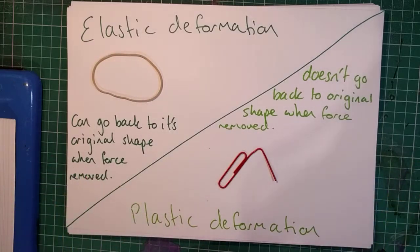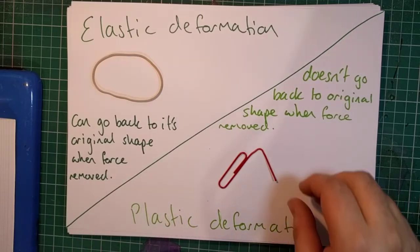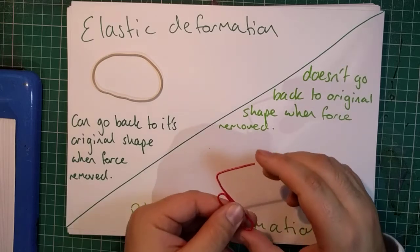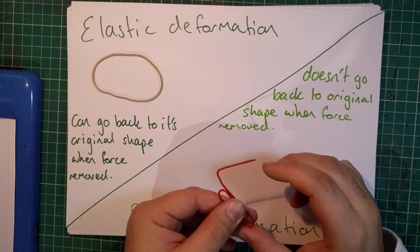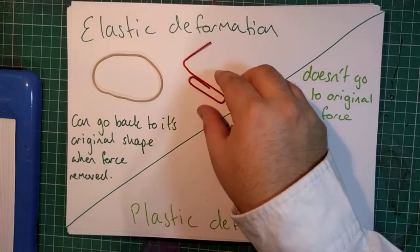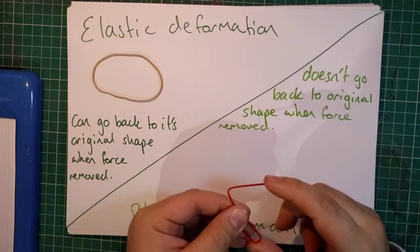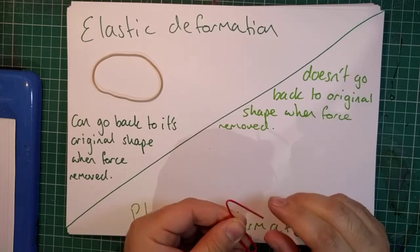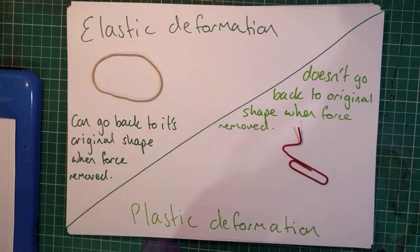Some materials much more easily undergo plastic deformation than elastic deformation and vice versa. So this steel paper clip, it is possible to bend it just a little bit. Can you see that tiny little flex there? You can bend it a little bit and it will elastically deform. It will return to its original shape if you apply a small force. On the other hand, if you apply a slightly larger force, then it will undergo plastic deformation and permanently change shape.